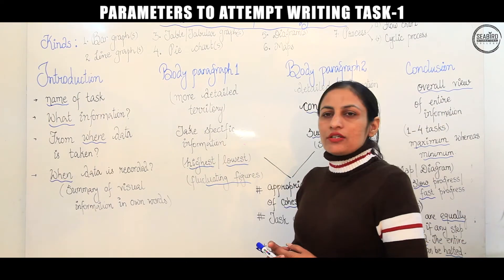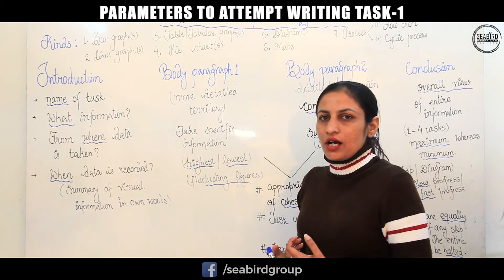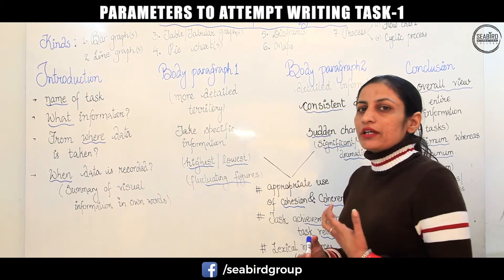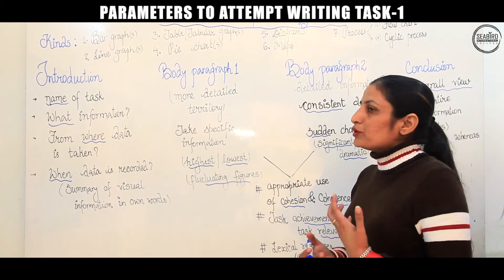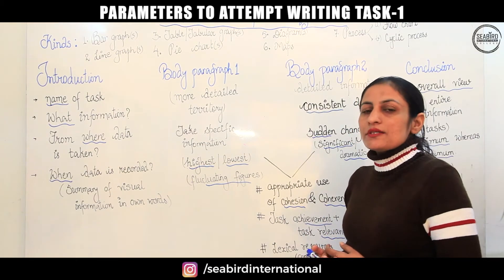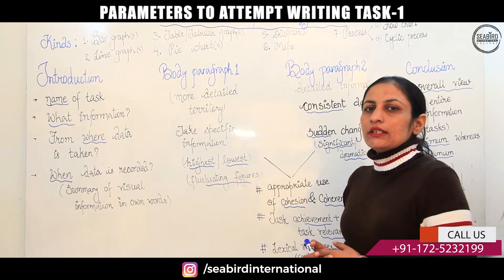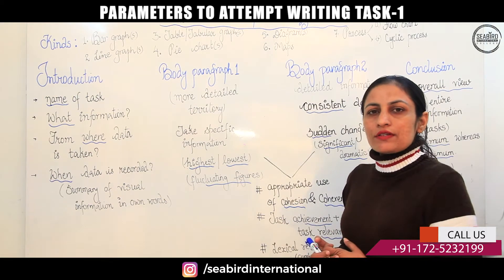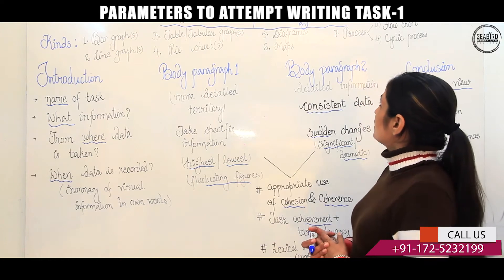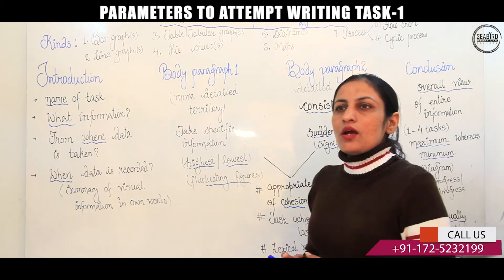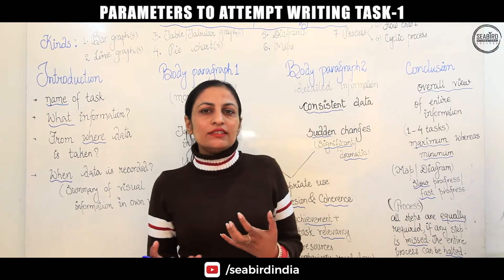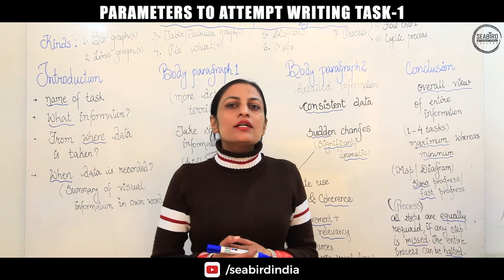After that, fourth can be a pie chart or pie charts. Then fifth, in terms of diagrams, different kinds of diagrams can be there — more than two or three. Next, maps. Maps always come in pairs where you have to compare the differences and compare the developments. The last but not the least is a process chart. A process chart can be of two types: one will be a flow chart and second can be a cyclic process.